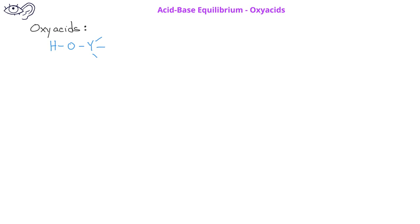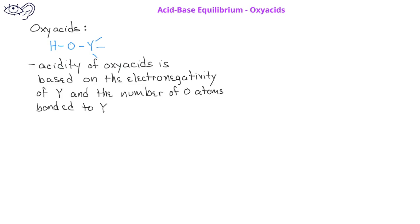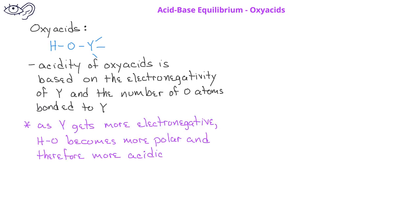For oxyacids, acidity is based on the electronegativity of the Y atom, as well as the number of oxygens attached to the Y atom. The first trend to know is that as the Y atom gets more electronegative, that means electrons are pulled away from the oxygen-hydrogen bond, making the oxygen-hydrogen bond more polar and therefore more acidic.